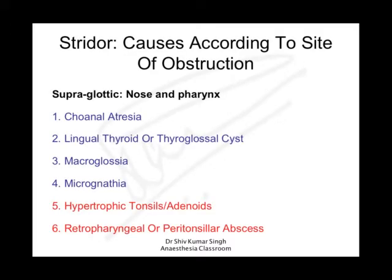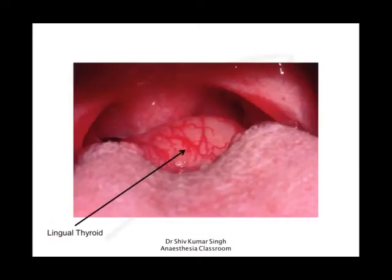Looking at the supraglottic causes for stridor, we're talking about lesions in the nose and pharynx. Choanal atresia, lingual thyroid, thyroglossal cyst, macroglossia, and macrognathia are congenital causes, whereas hypertrophic tonsils or adenoids, retropharyngeal or peritonsillar abscess are infective or acquired causes. There is an image of a lingual thyroid, which is a rare lesion but can be seen in clinical practice.